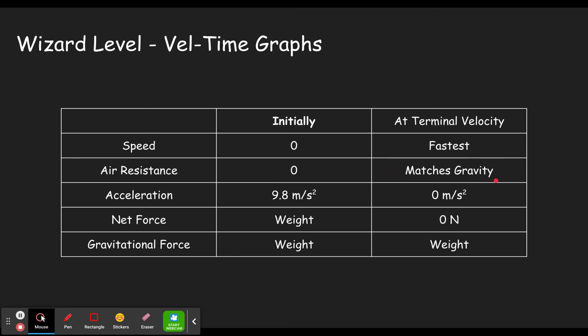At terminal velocity, the air resistance matches the gravity, but it's in the other direction. It's going up instead of down. That's why they cancel out. Acceleration starts out at 9.8 meters per second squared because there's no air resistance. The only force is gravity. And we're assuming we're still close enough to the surface of the earth that that number would be appropriate. And when we reach terminal velocity, there is no acceleration because there is no net force.